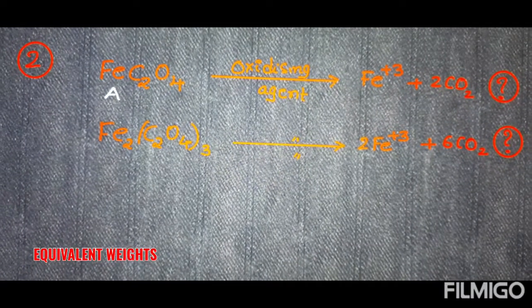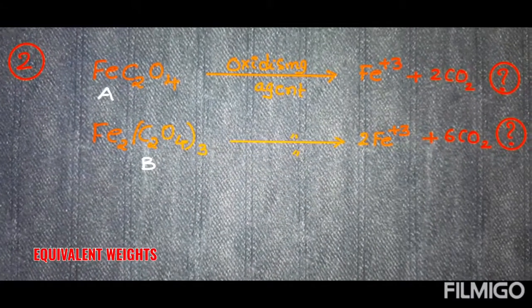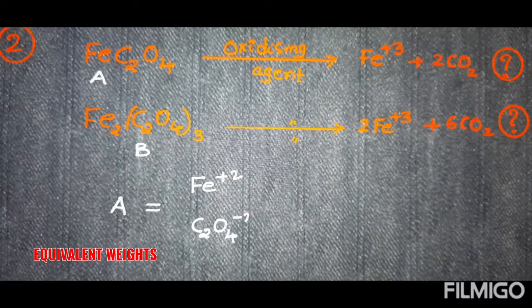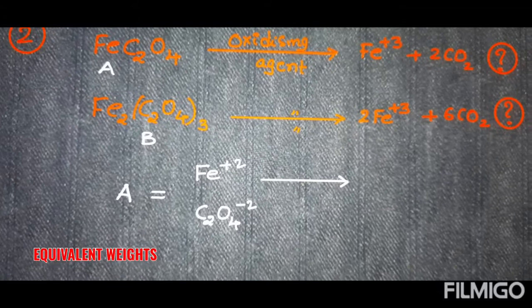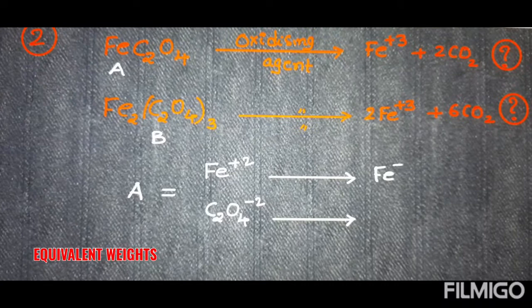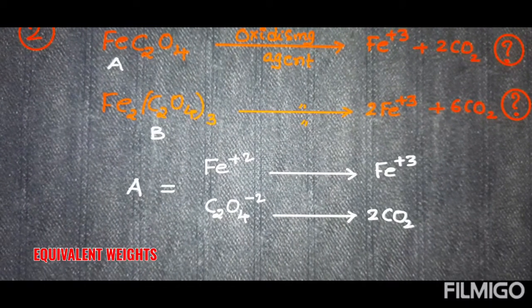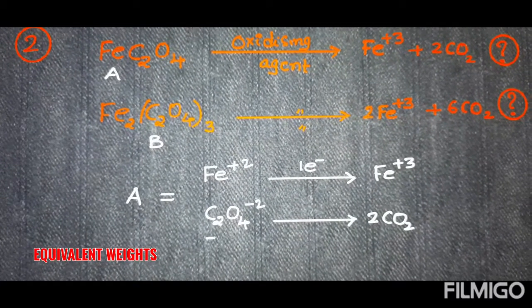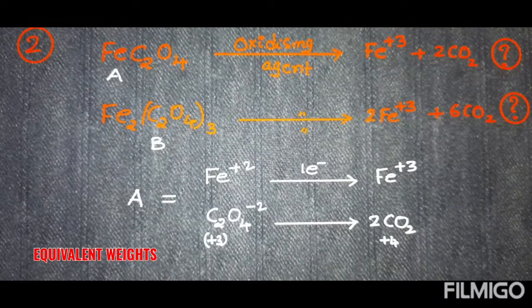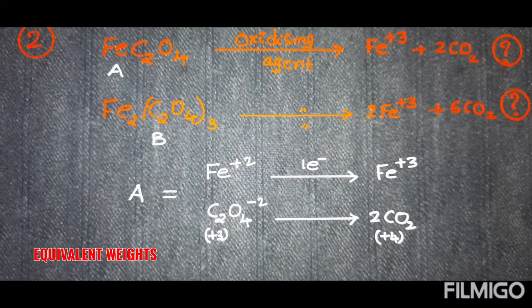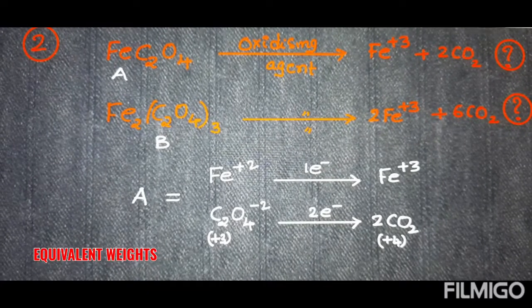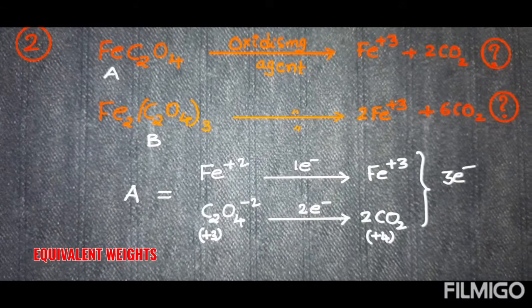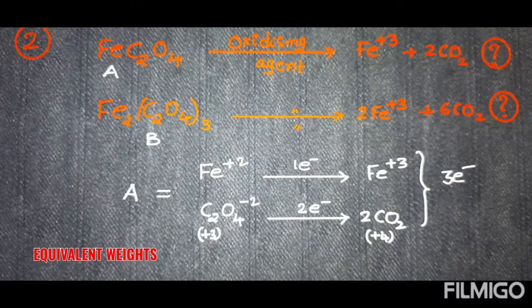For convenience, call ferrous oxalate molecule A. It is composed of Fe²⁺ and C₂O₄²⁻. In the presence of a suitable oxidizing agent, both species of the same molecule undergo oxidation. Fe²⁺ changes to Fe³⁺ — a change of one — so one electron is released from Fe²⁺. In C₂O₄²⁻ the carbon oxidation state is +3; in CO₂ it is +4, a change of one per carbon. With two carbons in one oxalate ion, two electrons are released.